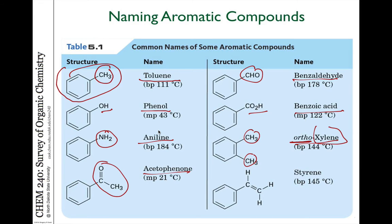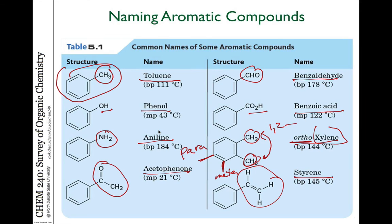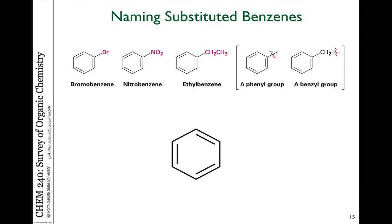The term ortho refers to the position of one group relative to the other, being a 1-2 relationship on the ring, as opposed to having the CH3 group in the 3 position or the 4 position, which we refer to as the meta and para positions — we'll come back to that in a minute. Another common molecule, styrene, has a double bond attached to a benzene ring.